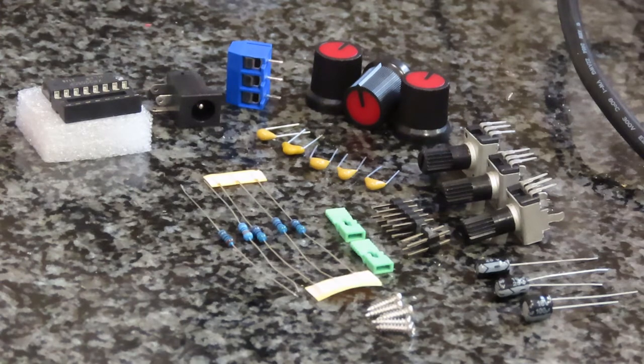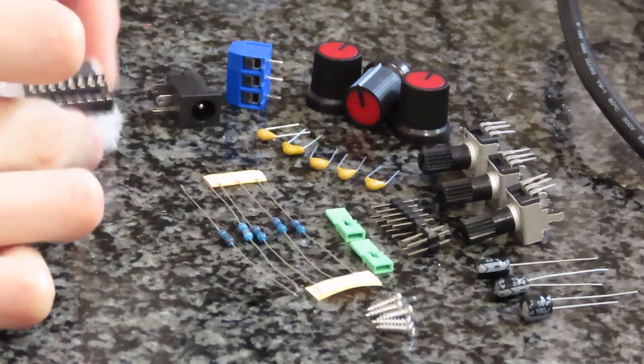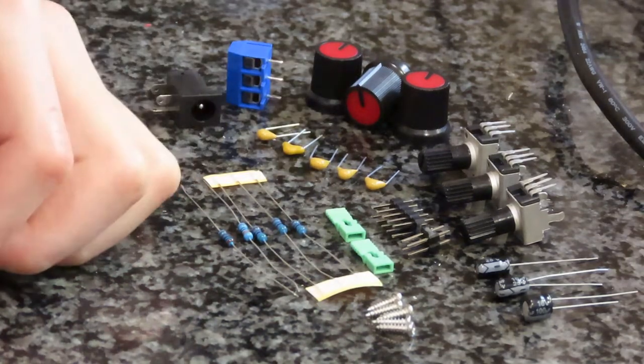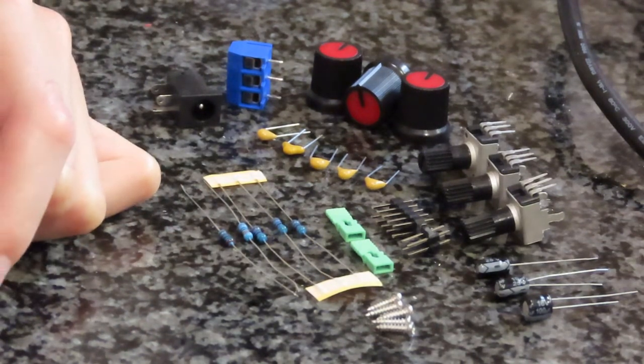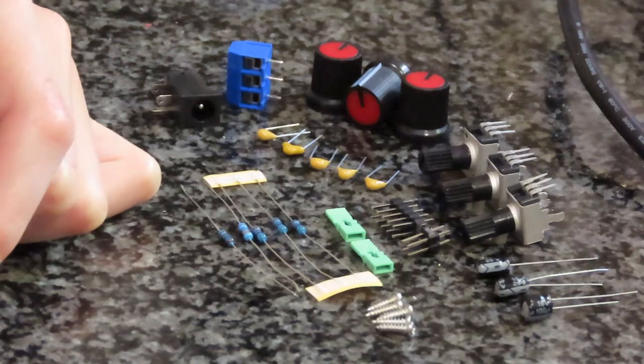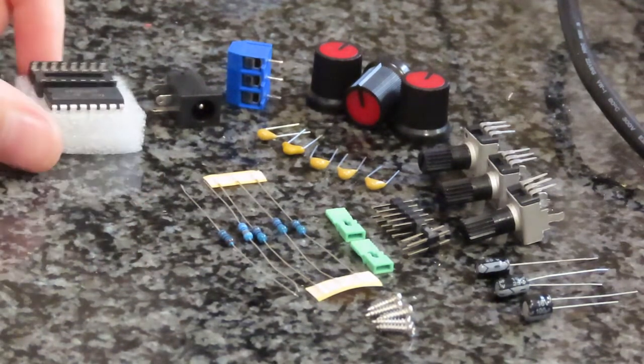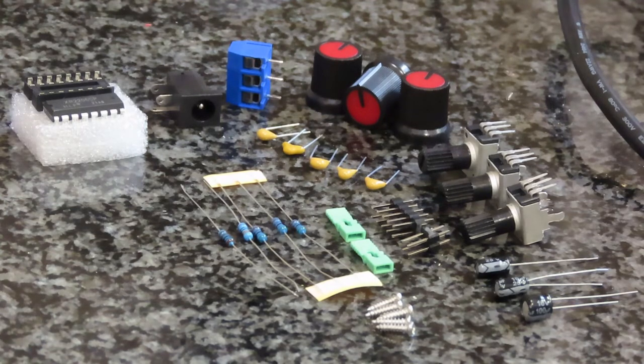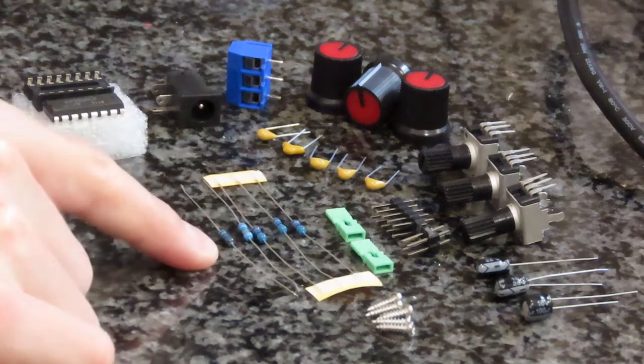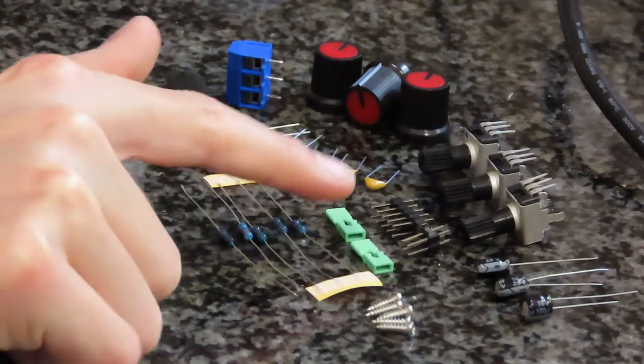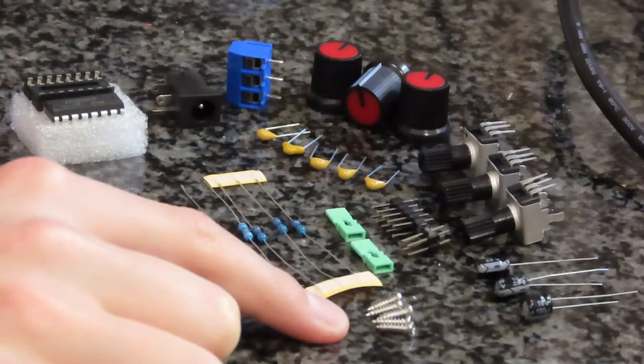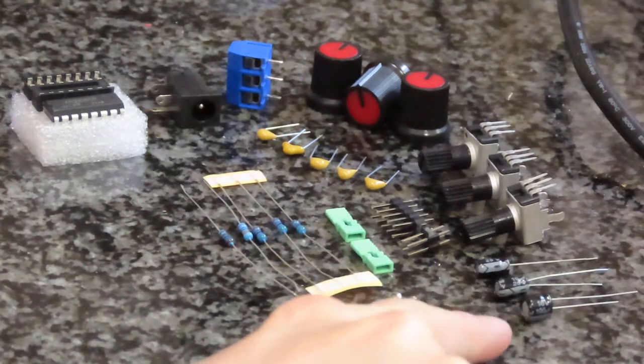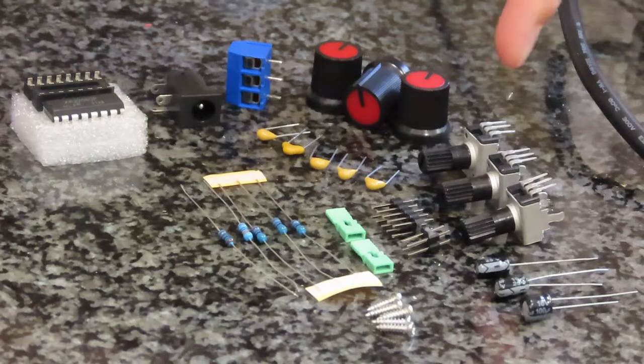So these are all the components. This is the pride of this little function generator. It is the chip. It's an XR-2206CP. That's the chip, and I think that is responsible for doing all of the function generating. These are just the passive components that will be used to manage the outputs and inputs. We've got some resistors here, jumpers and jumper headers, some screws to hold the board in the case, electrolytic capacitors, variable resistors, and some knobs.